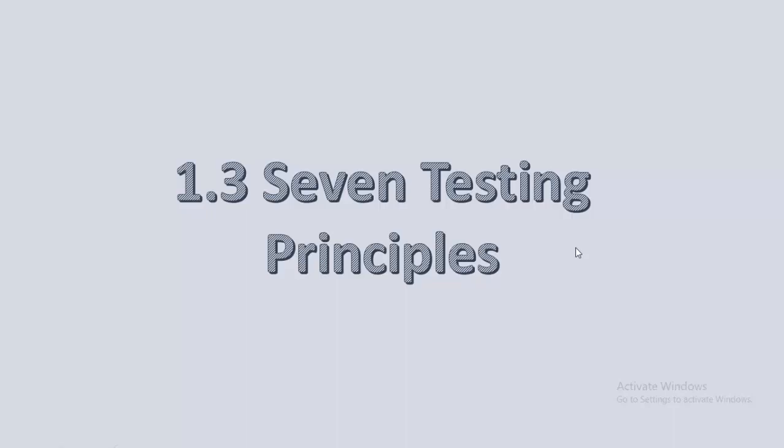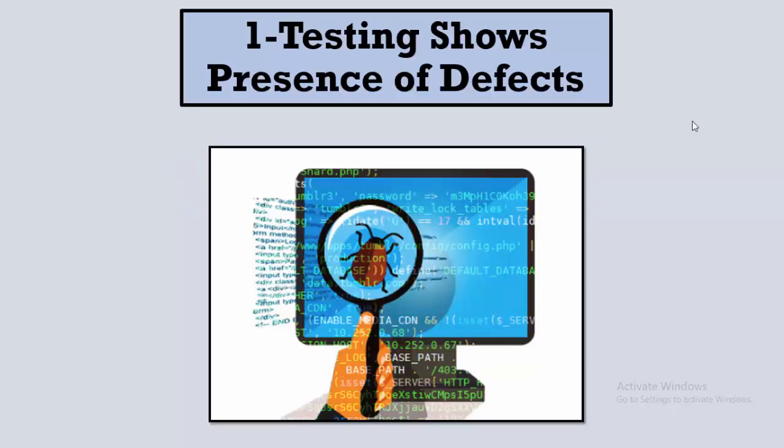Let's now talk about the seven testing principles. Testers around the world and over history agreed upon seven principles that should lead testing, whether you're testing a game, a website, an Android app, or an embedded system. These seven principles are applicable to all fields in software testing. The first principle states that testing shows presence of defects.